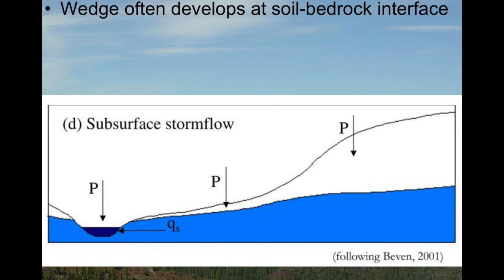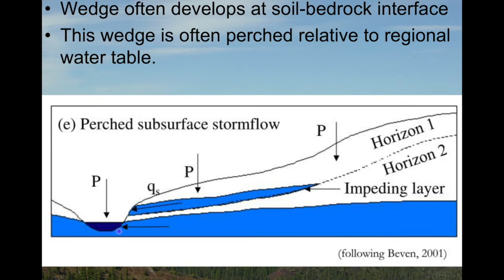This wedge often develops at a soil-bedrock interface and may be part of the regional water table. What you may see is the water table rising very rapidly and transiently in response to rainfall inputs, as illustrated here — groundwater increasing in elevation or head over the storm and then falling at the end of the storm, feeding into the stream. However, sometimes and quite commonly, the wedge can be perched — that is, above or separate from the regional water table.